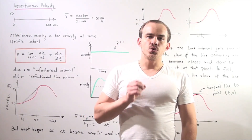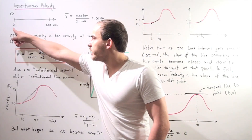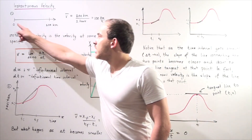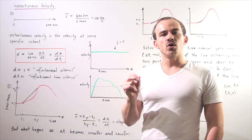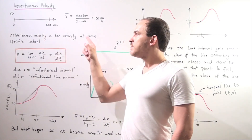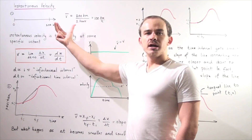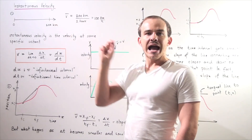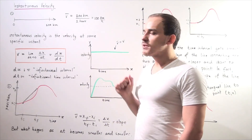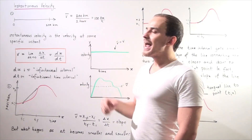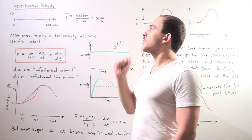Suppose we get into a car and drive 200 kilometers from some initial point to some final point, and that takes us 200 kilometers away from our initial point. Suppose the time it takes us to drive that distance is 2 hours. What is our average velocity? Average velocity is simply displacement divided by time elapsed, and since our displacement is 200 km and our time is 2 hours, our average velocity is 100 kilometers per hour.